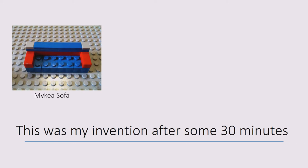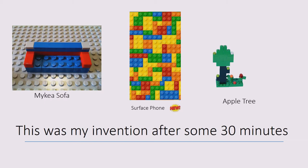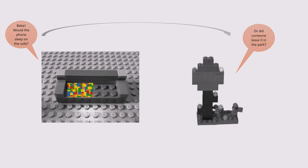There is a MyKia sofa, an apple tree, and ladies and gentlemen, presenting for the first time the much-rumored Surface Phone. My daughter looked at these things and she was happy — she giggled, yay. Then she asked me a question. She asked, Baba, would this phone sleep on the sofa or did someone leave it in the park under the tree? Basically she was asking — she was craving for a story. But all the time I spent was just massaging, sorting, and creating these structures. I didn't have a story.